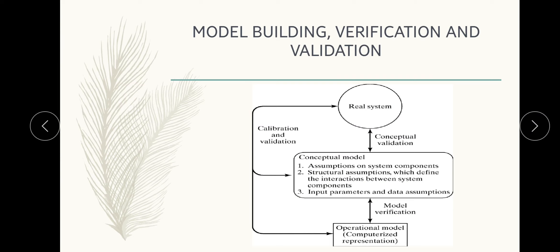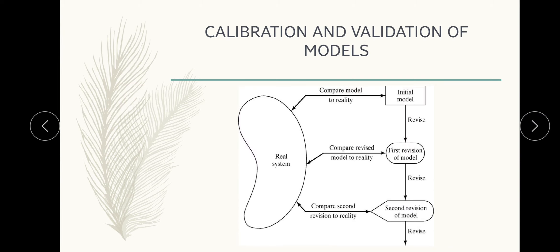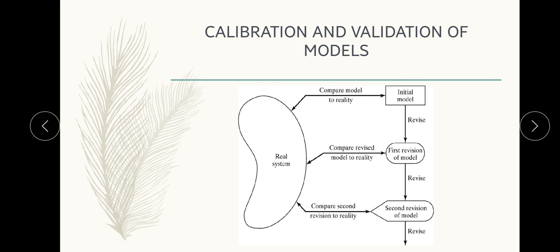Now we move on to verification of simulation models and calibration and validation of models. The diagram of calibration and validation of models is provided here. We have the real system, the initial model, the first version of the model, and the second version of the model. From the initial model to the first revision model, we have a concept called revise, and from the first revision model to the second revision model, we revise again. Verification and validation, although conceptually distinct, are usually conducted simultaneously by the modeler.